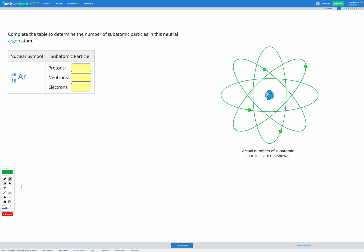In this question, we're asked to determine the number of subatomic particles in the neutral argon atom that's shown. So subatomic particles, those are our protons, neutrons and electrons.